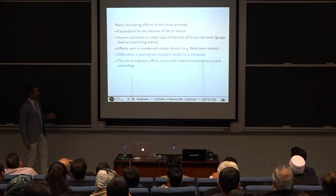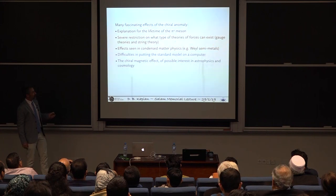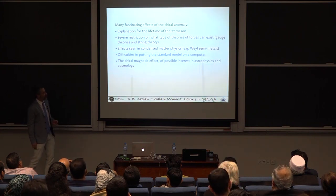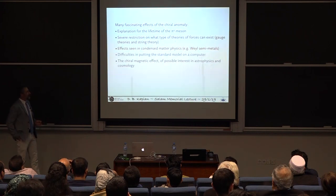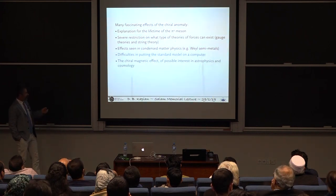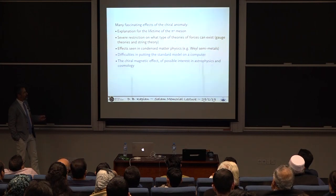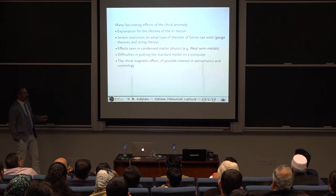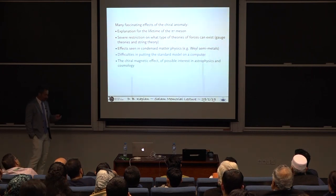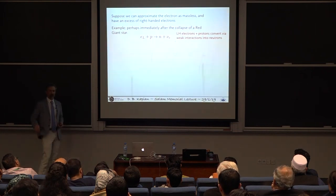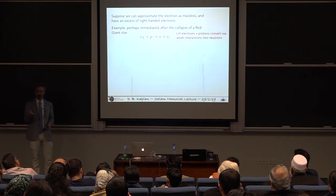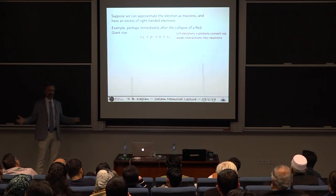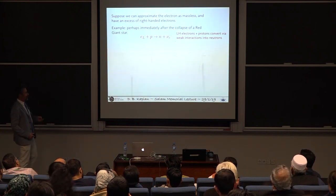One of them is that it explains the lifetime of the meson, the pi-zero meson. Another one is that it puts incredible restrictions on the types of theories that you can create that are self-consistent. This wasn't known when Glashow, Weinberg, and Salam had done their theory, but there's this beautiful cancellation of effects in their theory that makes it not suffer from the problems that the anomaly can cause. So it's a good theory. Another effect, which I'll talk about briefly, in condensed matter physics, there are things called Weyl semi-metals that show the anomaly. I'm going to mention two things here. One is that it pertains to the difficulties of putting the standard model on a computer, and the other is a cool effect called the chiral magnetic effect.